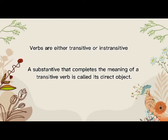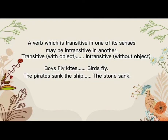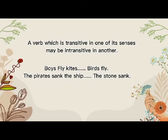Verbs are either transitive or intransitive. A substantive that completes the meaning of a transitive verb is called its direct object. Some verbs may be followed by a substantive denoting that which receives the action or is produced by it — these are called transitive verbs. All other verbs are called intransitive. When we say transitive, it has an object; intransitive is without an object. For example: 'Boys fly kites' — 'kites' is the object, so it is transitive. 'Birds fly' — without an object, so it is intransitive.